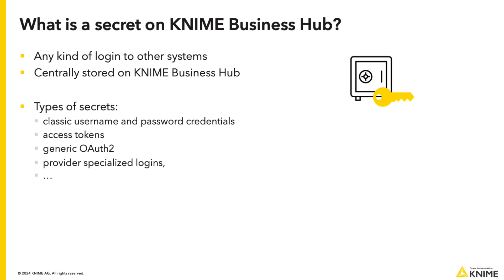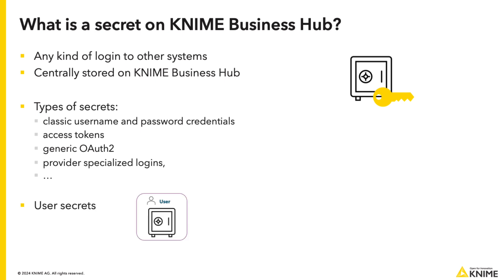KNIME Business Hub secrets can be owned and managed either by a user or by a team. User secrets are personal user logins, and you can manage them from your profile page. Team secrets are logins shared within a team, and a team admin can manage them from the team page.